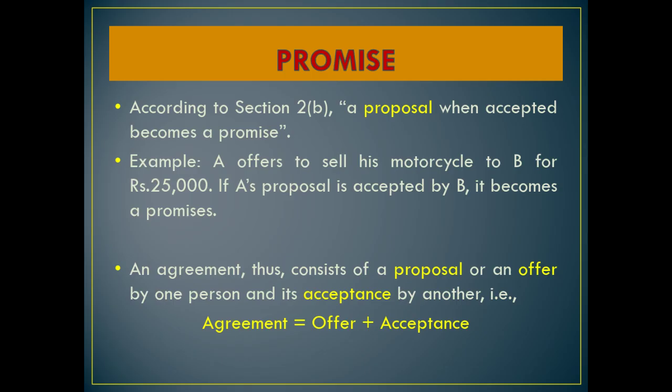Next, promise. According to Section 2b, a proposal when accepted becomes a promise. When is a promise formed? When an offer is accepted — offer is also called a proposal. When the proposal is accepted, it becomes a promise. For example, A offers to sell his motorcycle to B for rupees 25,000. If A's proposal is accepted by B, it becomes a promise — B says 'I will buy your motorcycle.' Then it becomes a promise.